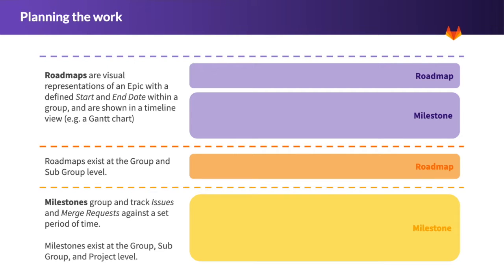Roadmaps are visual representations of an epic. They have a defined start and end date within a group and are shown in a timeline view, similar to a Gantt chart. The epics roadmap page shows a visualization for all of the epics which are under a group and its subgroups.